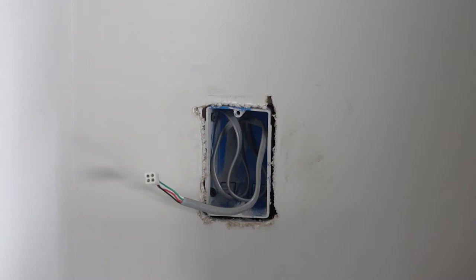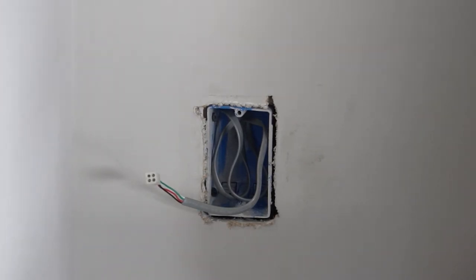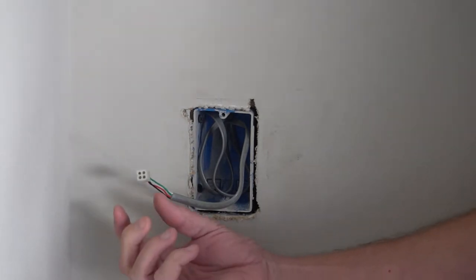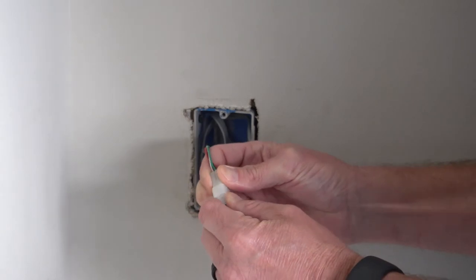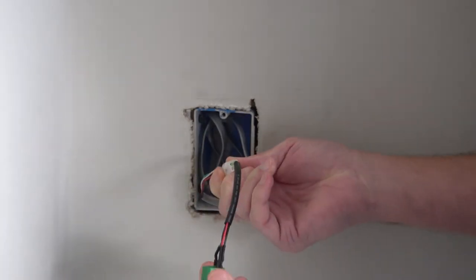Install the key switch controller in a single gang box. Mount it in an area that will be visible from the lowered cart assembly. Run the control wire from the motor drive assembly control board to the key switch controller.